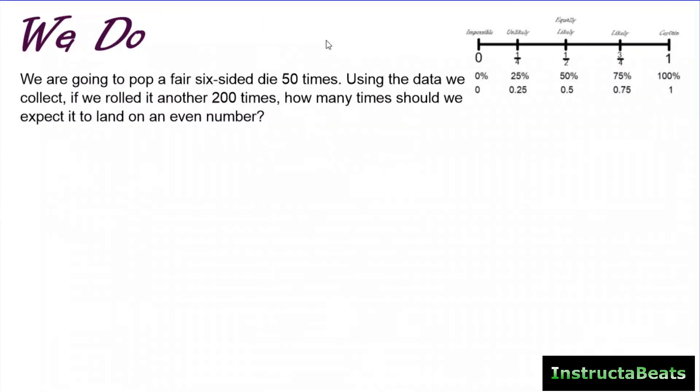So we're going to do our I do problem involving that type of question. It says we are going to pop a fair six-sided die 100 times. Using the data we collect, if we rolled it another 200 times, how many times should we expect it to land on an even number? So the first thing I want to do is come up with the theoretical probability of landing on an even number. Now we know it's a fair six-sided die. So your sample space or all the outcomes that are possible is 1, 2, 3, 4, 5, and 6.